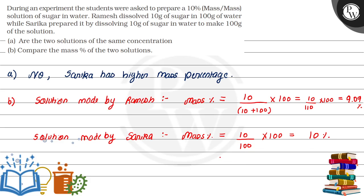So now we have seen that the solution made by Sarika is more appropriate — it is the required one. Ramesh's solution is 9.09% whereas Sarika's is 10%. This is our final answer. I hope you understood. Thank you so much.